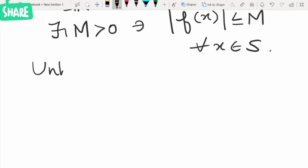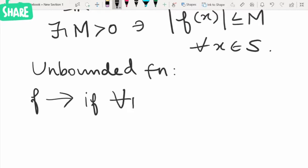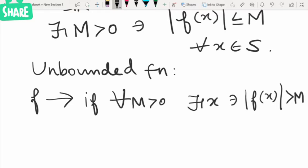If it can be bounded by M, we say this is a bounded function. An unbounded function is the converse of this. A function f is said to be unbounded if for every M greater than zero, we can find x such that modulus of f of x is greater than M.